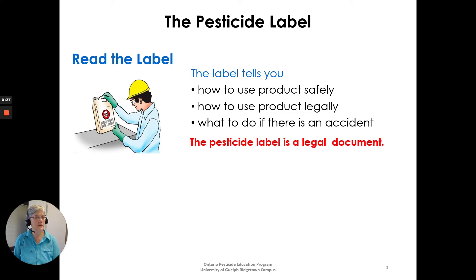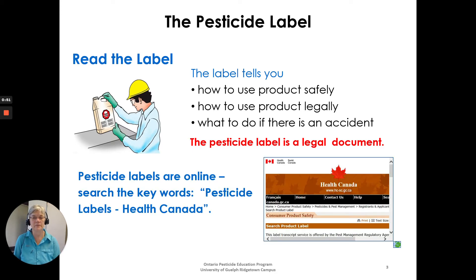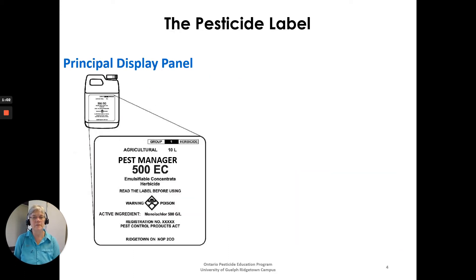Reading the label — the pesticide label tells you how to use the product safely, how to use the product legally, and what to do if there's an accident. It is a legal document and charges can be laid against you if you don't use a product according to that pesticide label. Pesticide labels are online — search the keywords 'pesticide labels Health Canada' and you will come to the pesticide label search, a good source of up-to-date labels that you can print or save.